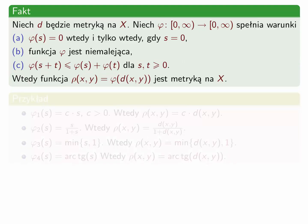Potrzebuję na chwilę odejść od tematu równoważności metryk. Następujący fakt daje metodę, jak z jednej metryki konstruować inne. Niech d będzie metryką na x. Jeśli φ jest subaddytywna — czyli φ(s+t) ≤ φ(s) + φ(t) dla dowolnych nieujemnych s i t — to funkcja ρ(x,y) równa φ złożone z d(x,y) jest metryką na x. Dowód tego faktu jest prostym ćwiczeniem.